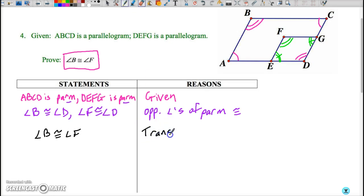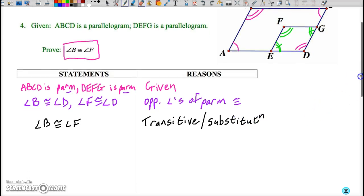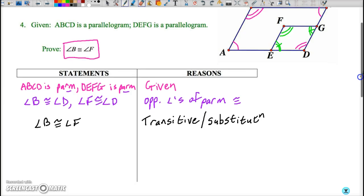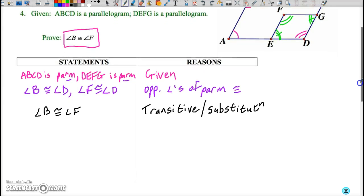The transitive or we would accept of course substitution as an alternative. So transitive or substitution and that's the end of the proof, pretty straightforward proof using properties of a parallelogram.